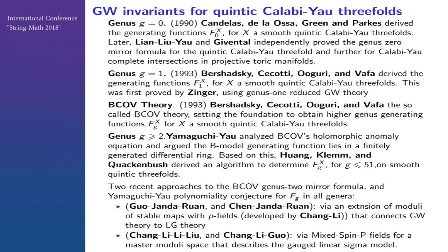We worked out the B-model generating function and found the finitely generated cohomology ring. The whole thing would be generated by a ring with five generators. I was hoping it would look like an odd differential form here, and it came out quite nicely. Based on this work, Huang, Klemm, and several other people derived the algorithm to determine Fg for g equal to 1 to 51.